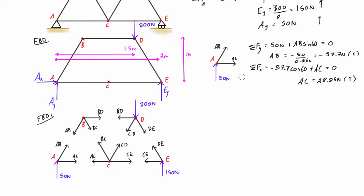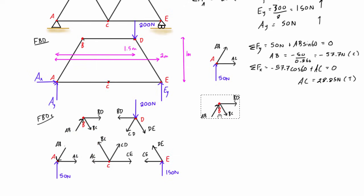Now that we know AB is in compression, I suggest coming back and switching the arrows on the diagrams to reflect the actual sense of the force. This helps avoid confusion as we progress. Moving on to joint B: we know AB is in compression with a magnitude of 57.7 newtons, so we can write that value directly on the free body diagram.